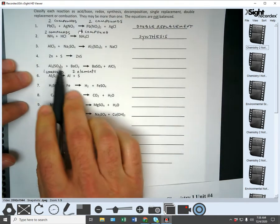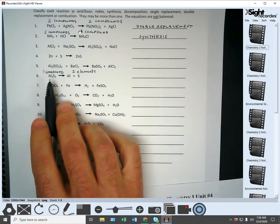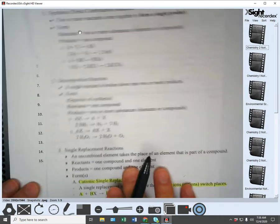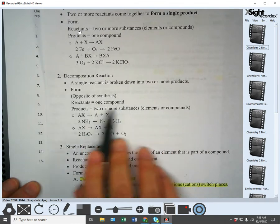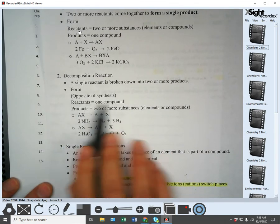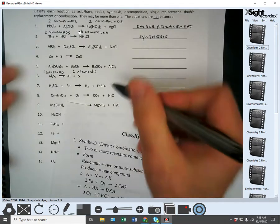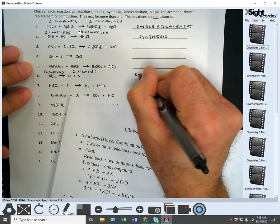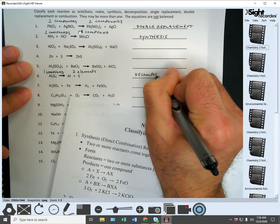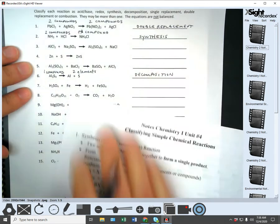So again, here's a key thing. One compound. What only has one thing on the reactant side? Well, the only one that has one thing on the reactant side is one compound for decomposition. So this has to be decomposition.